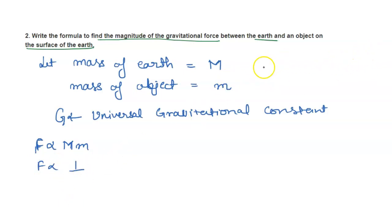Let the radius of Earth equal capital R. The Earth is very big and here is the object. We consider the distance from their centers. You can see that this distance is very small and can be neglected.